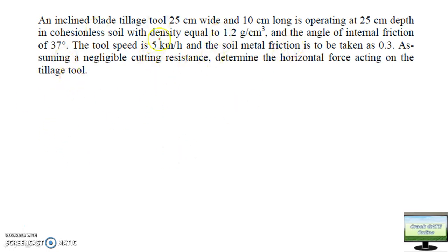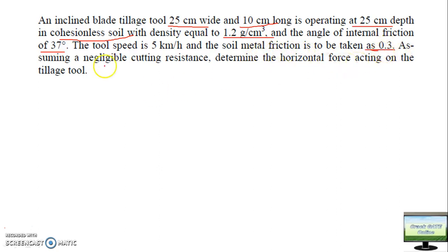The problem gives: width of the blade, length of the blade, and depth of operation. It is a cohesionless soil, so c = 0, and density is given. Soil angle of internal friction is 37°. Tool speed is 5 kmph. Metal friction coefficient μ' = 0.3. Cutting resistance is negligible, so it will be taken as 0. We need to determine the total horizontal force acting on the tillage tool — that is, the draft.